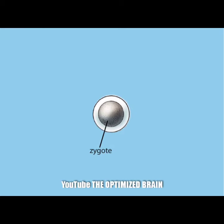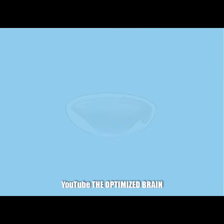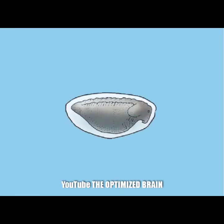Whether laid on land or in water, the egg must remain moist during development. The egg readily loses water through its delicate envelope if its surroundings are dry. The single-celled zygote divides many times to form an embryo with thousands of cells. As it develops, the embryo elongates and forms a tail bud.